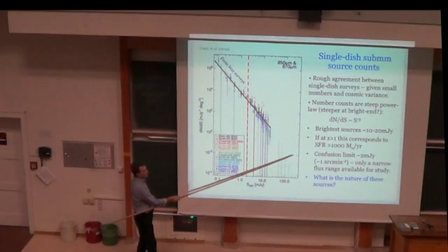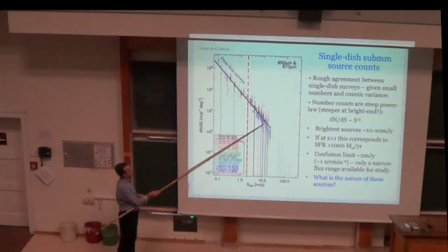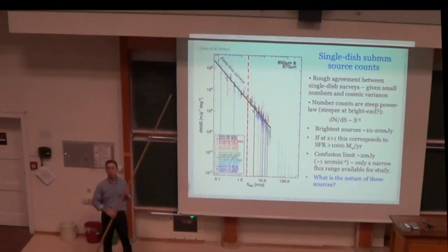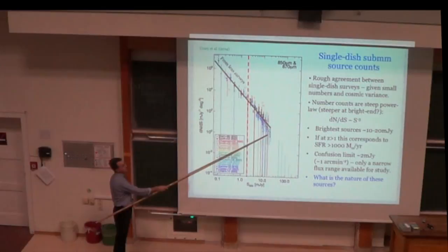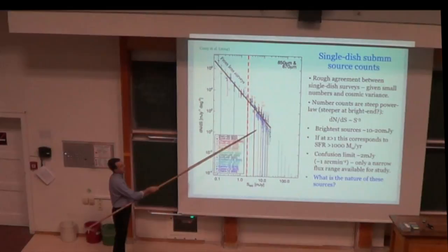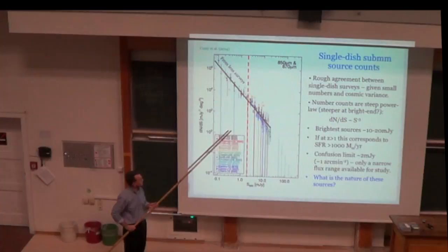So this is differential number counts of sources as a function of apparent flux. And what you see is, there are data sets taken over 15 years or something, a decade and a half, before we managed to get decent interferometer to work with. And these counts rise very steeply. They go as flux to the minus three, the differential counts. So they rise from very low surface densities at the bright end, around 10 milliJanskys. And these are things which have, that flux corresponds roughly to a star formation rate of about a thousand solar masses a year. So that's a really intense star formation. And they increase, the counts are very steep down to the confusion limit. And this is the point where the resolution of the map is so poor that the sources become blended and you're unable to detect them individually.